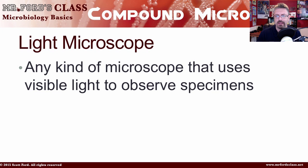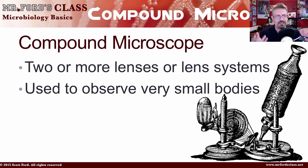Let's define some terms so we know what we're talking about. A light microscope is any kind of microscope that uses visible light to observe specimens. A compound microscope is defined as two or more lenses or lens systems used to observe very small bodies. Depending on who you read, these two terms are sometimes combined together.